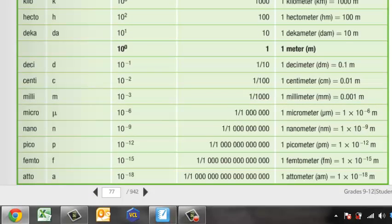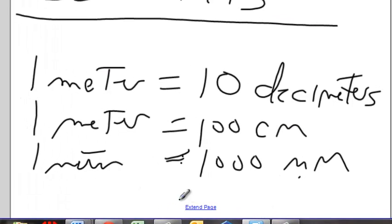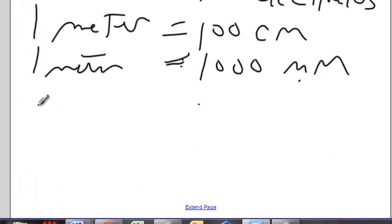For every 1 micrometer, there's 10 to the negative sixth meters. Or conversely, for every 1 meter, there's 10 to the sixth micrometers.